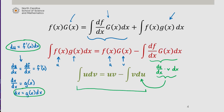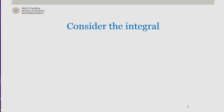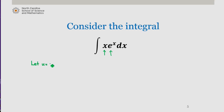Part of the challenge in applying the method is identifying the functions in the integrand to define as u and v. Let's work through an example to help make this clear. Consider the integral of x times e to the x. Since this is an integral of the product of two functions, we can apply our new method — one function being x, the other being e to the x.